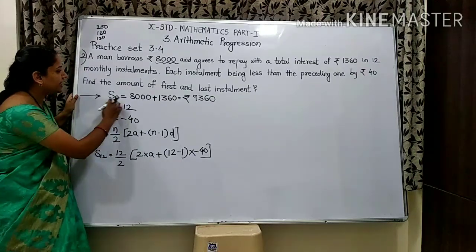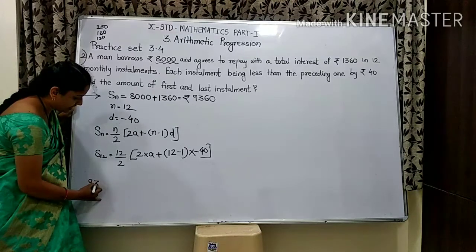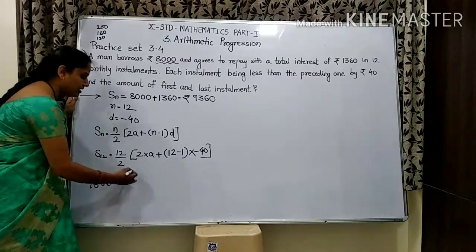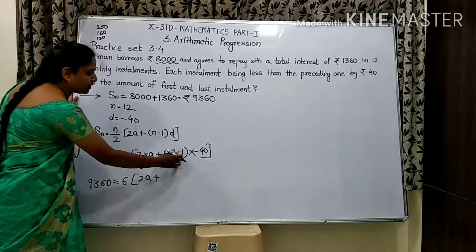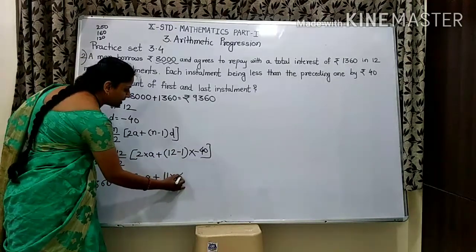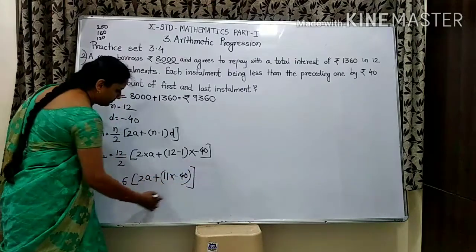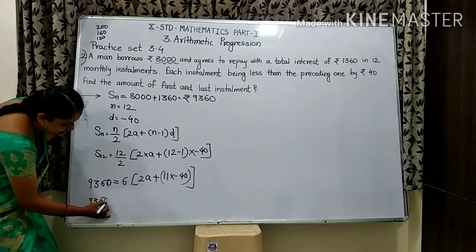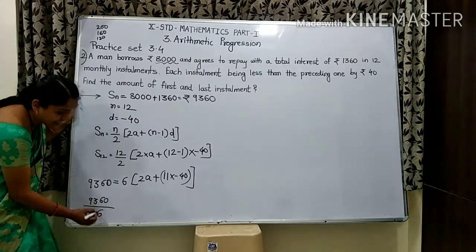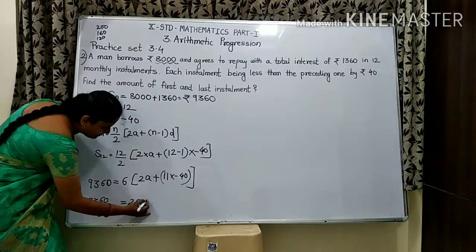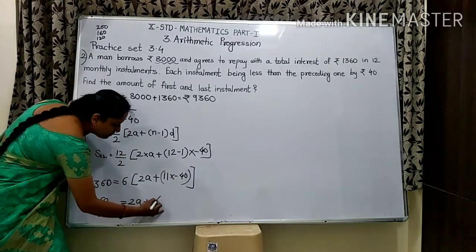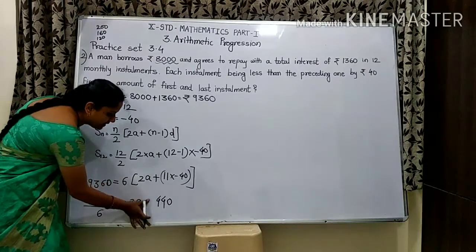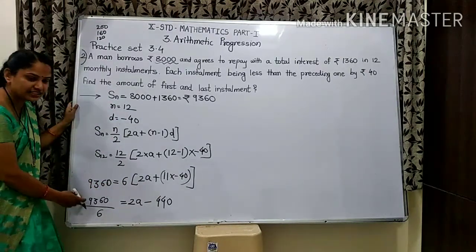So S12 = 9,360. Substituting: 9,360 = 12/2 × (2a + (12−1)(−40)) = 6 × (2a − 440). Dividing 9,360 by 6, and solving: 2a − 440 = 1,560, so 2a = 2,000, giving a = 1,000.